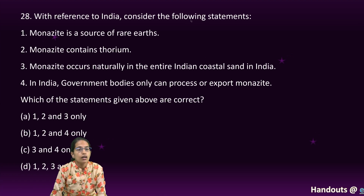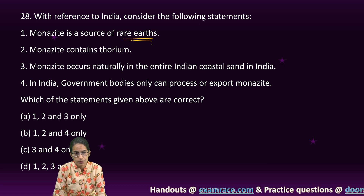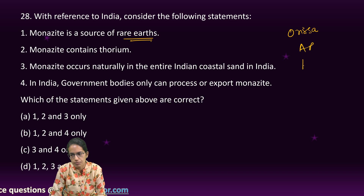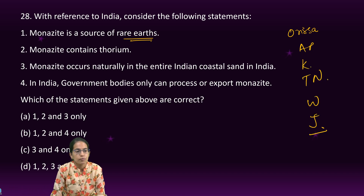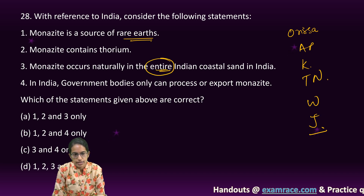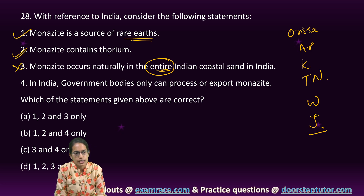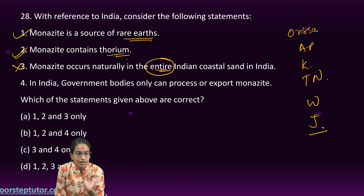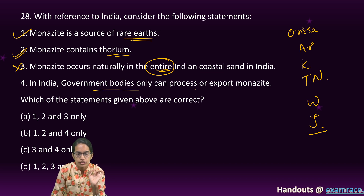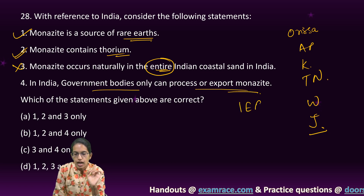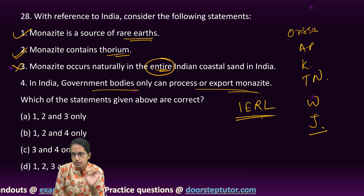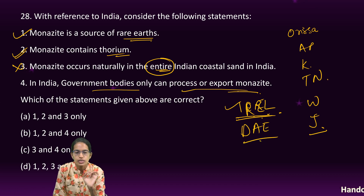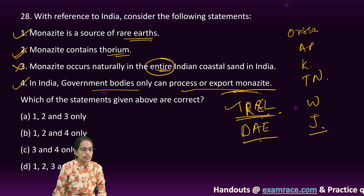With reference to India, monazite is definitely a rare earth mineral found in beach sand along the coast of India. It is predominantly found in Odisha, Andhra Pradesh, Kerala, Tamil Nadu, West Bengal, and Jharkhand — but not along the entire coast. Monazite contains around 20 to 30 percent thorium, making it one of the major sources of thorium. Except for monazite, all other rare earth minerals are allowed to be processed by private entities; only monazite must be processed by a government body — specifically IREL, the Indian Rare Earths Limited, under the Department of Atomic Energy. So statements one, two, and four are the right options.